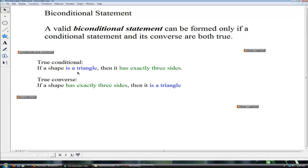Here we have a true conditional. If a shape is a triangle then it has exactly three sides. True. Its converse also is true. If a shape has exactly three sides then it is a triangle.